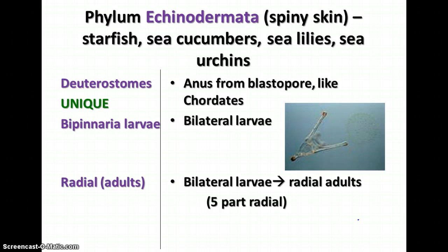Echinoderm means spiny skin, and this includes the starfish, the sea cucumbers, sea lilies, and sea urchins. Being deuterostomes is what makes them unique along with the chordates, because they're the only groups that have that. They have a larva called a bipinnaria larva — it's bilateral — but the adults have radial symmetry. So the bilateral larva develops into radial adults, and most echinoderms exhibit five-part radial symmetry.